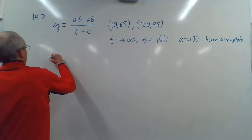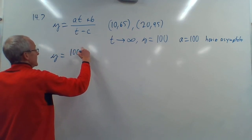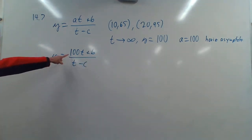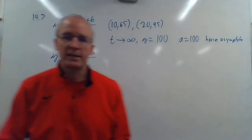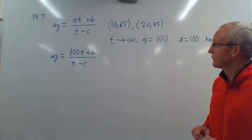So right away, we can write Y is equal to 100T plus B divided by T minus C because the horizontal asymptote is 100. That's the highest score you can get. Can't get over 100.